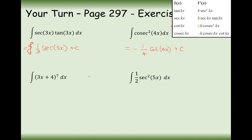For the next one, we're going to treat it like an integral of x to the power of 7 dx. Increase the power by 1 to an 8, divide by the 8 at the front, but also divide by 3 at the front because there is 3 inside the brackets. So it's going to be 1 over 24 times (3x + 4) to the power of 8. If you don't really like that method, don't worry — there's going to be a better way of doing it later on in the chapter.